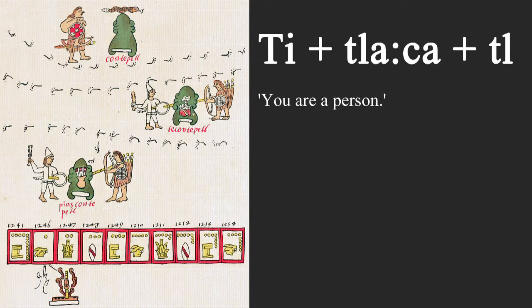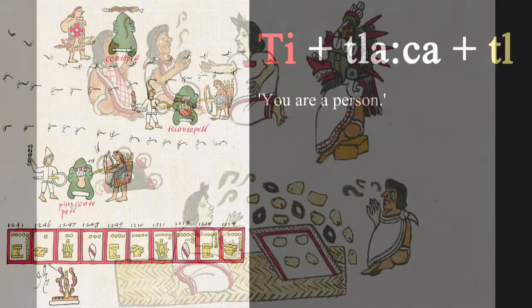A fully formed noun in Nahuatl always has at least three parts: a subject prefix, the noun root, and some type of suffix. It may also take additional prefixes, suffixes, or other attachments, but the first three are minimally required. We find all three in our example tlakatl. T marks the second person singular subject, tlakat is the noun root for person, and the tl is the singular absolutive suffix. Set together, the noun's components make a full sentence: t-tlakatl — you are a person.